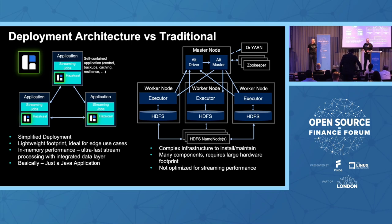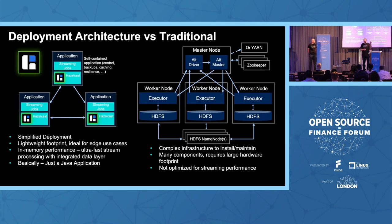We can deliver a particular window of latency very consistently because of our architecture. With Spark, Flink, and similar technologies, maybe you can tune it and get pretty good latency, but when you get a spike, all bets are off. And you can't just scale a Spark cluster plus all the supporting data pieces to handle twice the normal trading volume in a day — whereas you could do that with Hazelcast.